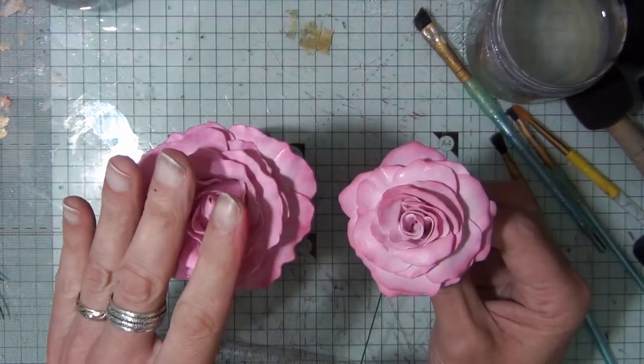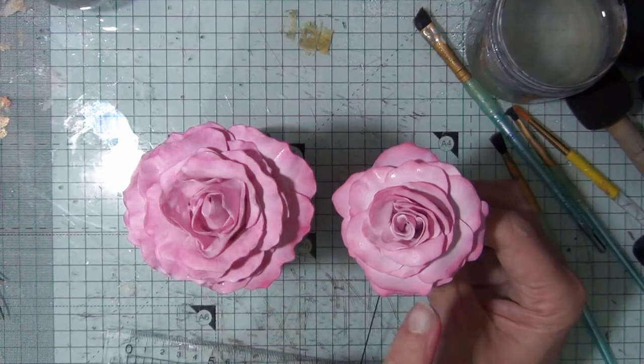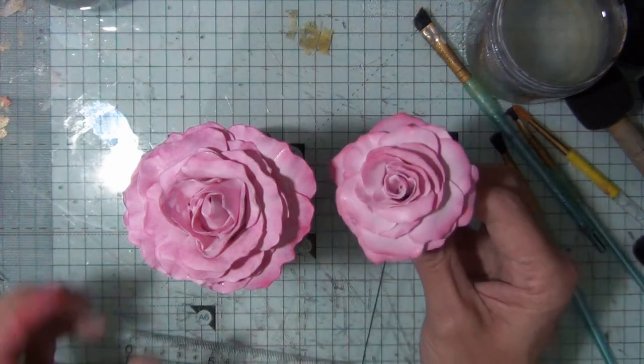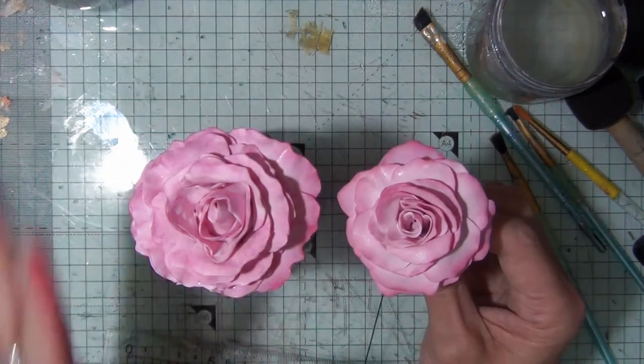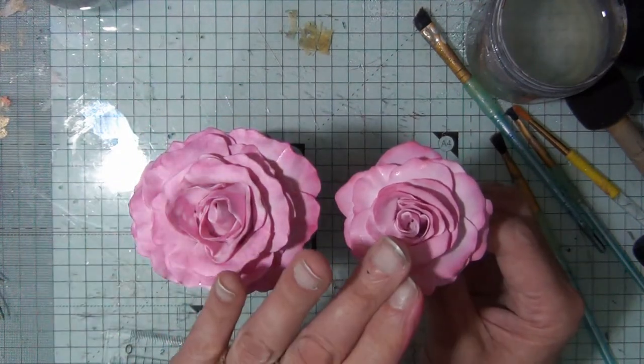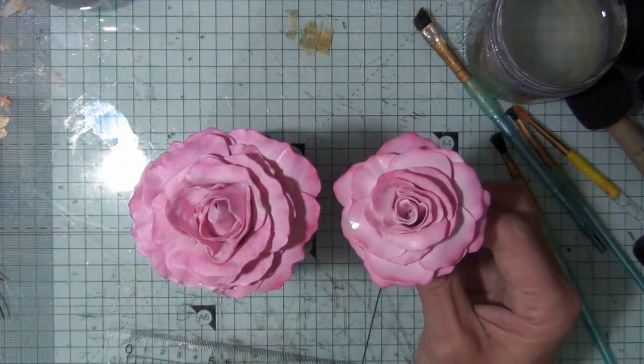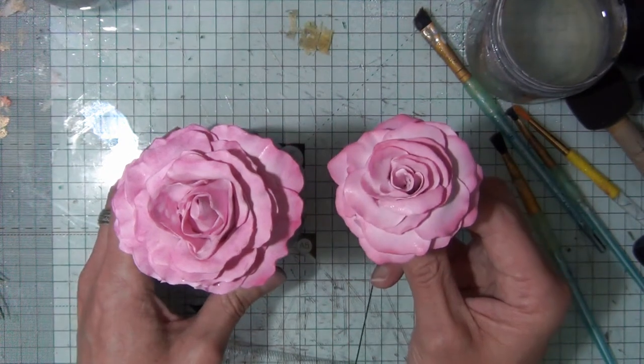So whether it's from the five piece petal cutter or indeed the easiest rose ever cutter, they are the two different looks and also the two different paint techniques. This was the brush and then we use the foam applicator on this one. So all that's left now is to actually wire them together.